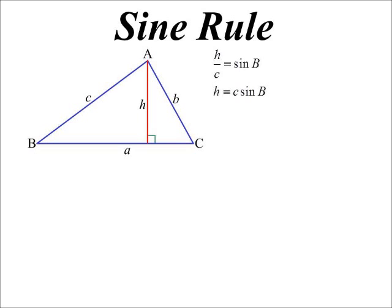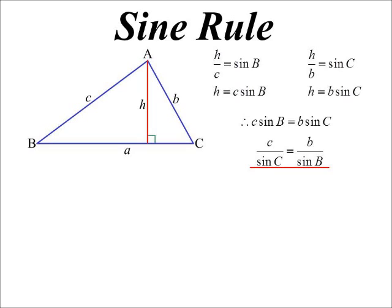But if we look at the right-hand triangle, then H over B would be the sine of C. So the H's must be the same H. So therefore, C sine B equals B sine C, and then we can rearrange that into the format that we used to see. C over sine C is equal to B over sine B.